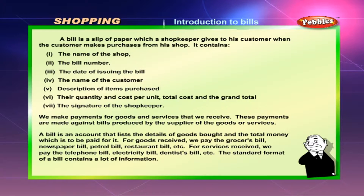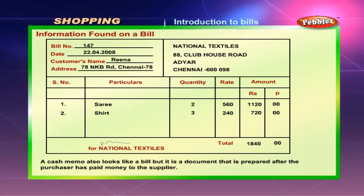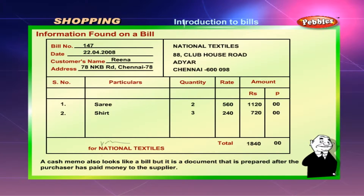The standard format of a bill contains a lot of information: name and location of supplier, name and address of purchaser, bill number, bill date, number of items purchased, particulars of items purchased, quantity or units of items purchased, unit price or rate of items purchased, cost of individual items purchased, total money to be paid, and signature of supplier.